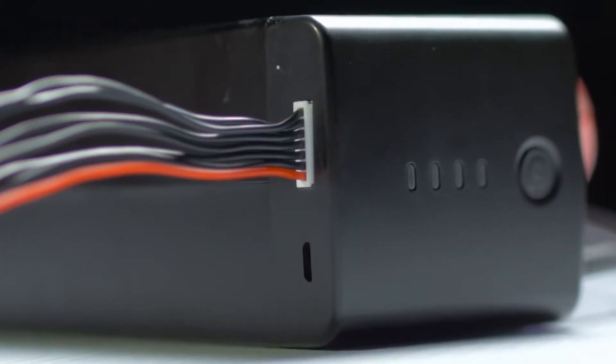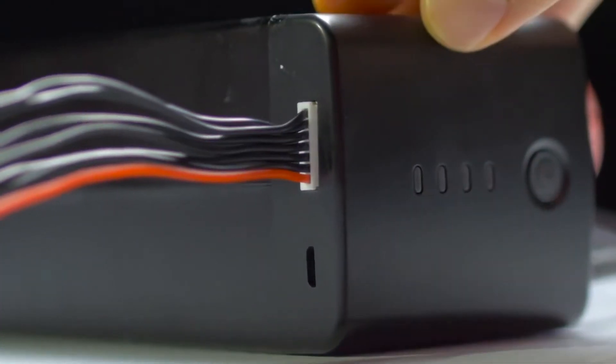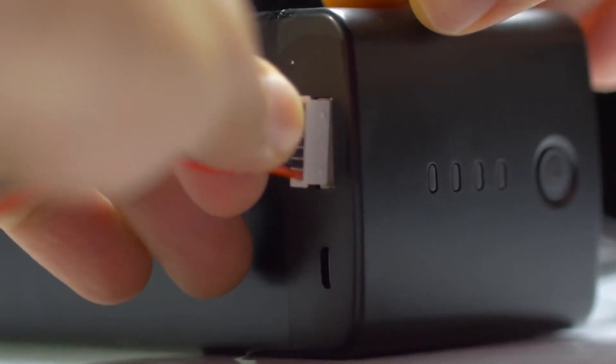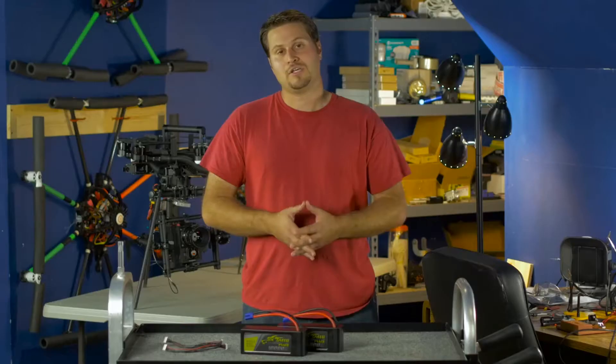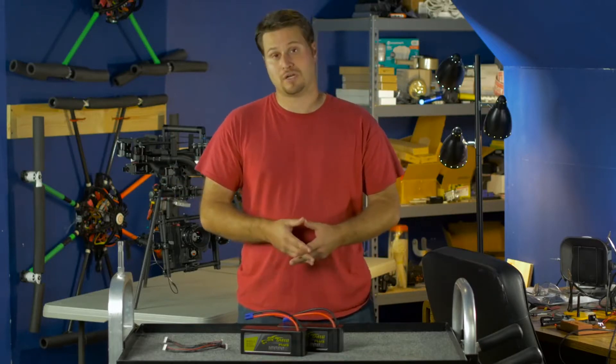One interesting design about the Plus batteries is the ability to remove the balance tap. The balance tap goes on the bottom and we use those when charging the battery. Those of you who fly with onboard telemetry that gives you the overall voltage are kind of moving away and not really using voltage alarms.